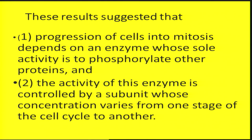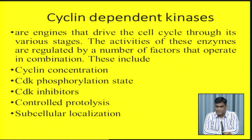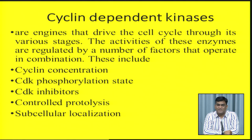The progression of a cell into mitosis depends on an enzyme whose sole activity is to phosphorylate other proteins, that is cyclin-dependent kinases. The activity of this enzyme is controlled by a subunit whose concentration varies from one stage of the cell cycle to another, namely cyclin. Along with cyclin concentration, there are other factors that impact CDK activity. First and foremost is cyclin concentration: as it rises and falls, CDK activity rises and falls accordingly. Another factor is the CDK phosphorylation state.